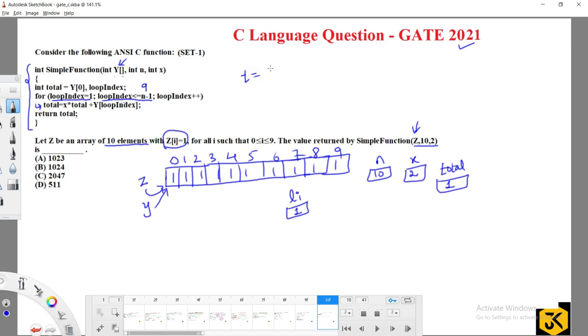So this is simple one, you can trace out that total equal to x into total plus y of loop index. So total equal to x value - what is the value of x? x value is 2, which is constant in each and every iteration - into total, what is total present? 1, plus y of loop index. y of loop index is y of 1, y of 1 is 1 only. 2 into 1 plus 1, that is 3. That will be updated in the total variable. So that is 3. So this is for when the loop index value is 1.